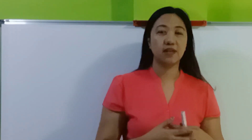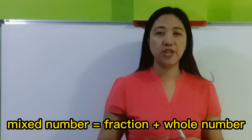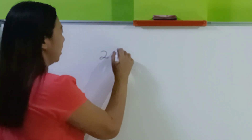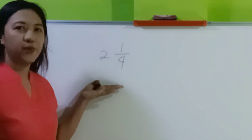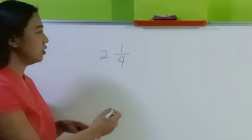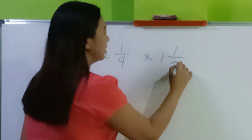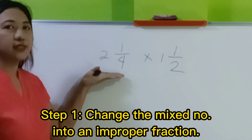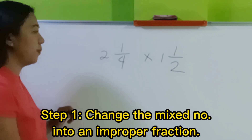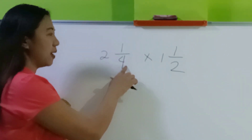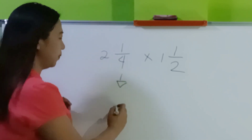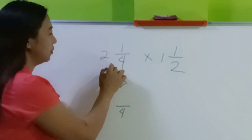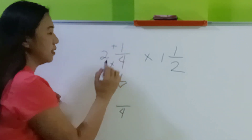How about if we multiply mixed numbers? A mixed number is a combination of a whole number and a fraction. For example, 2 and 1/4 is a mixed number. The first step is to change it into its improper form: copy the denominator, then multiply 4 times 2 to get 8, plus 1 equals 9.